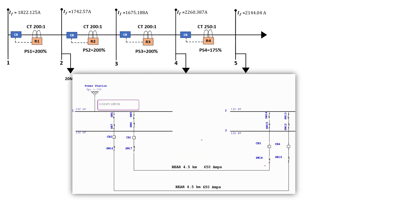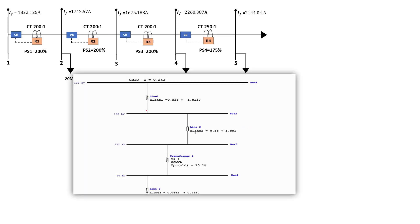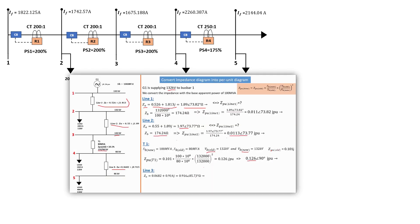We went ahead and did the impedance diagram. As you can see here for line one, Z-line-one is a representation of the cable impedance and all the elements that make part of that cable, the line, the transformer, and so forth. We did a tutorial to convert that power network into an impedance diagram, and then in tutorial number three we needed to determine the per-unit equivalence for our impedance diagram.